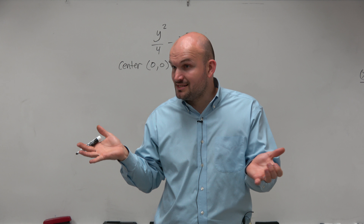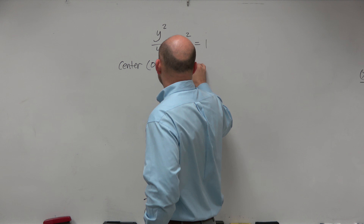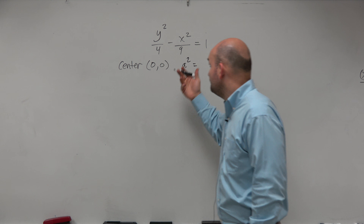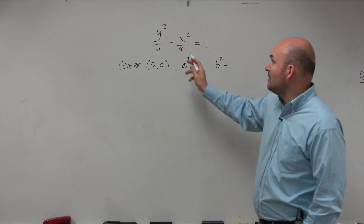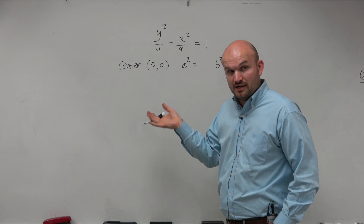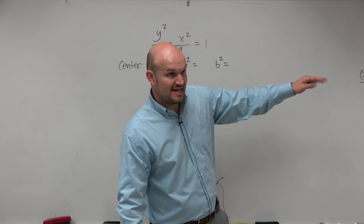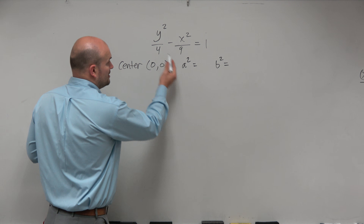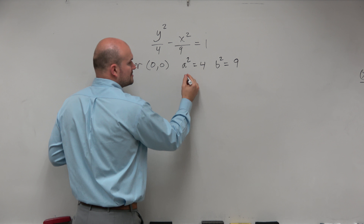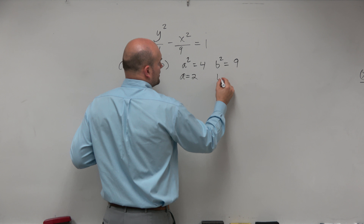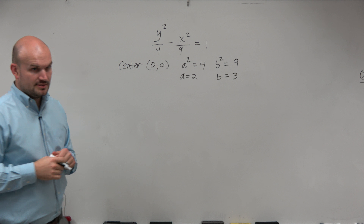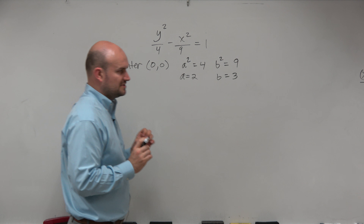One of the major mistakes is identifying your a squared and your b squared. Previously for an ellipse, a squared would have been 9. However, since we're subtracting the two expressions, this is a hyperbola. And if you look at your formulas, it's a squared minus b squared. So in this case, a squared is 4, b squared is 9, so therefore a is 2, b is 3.